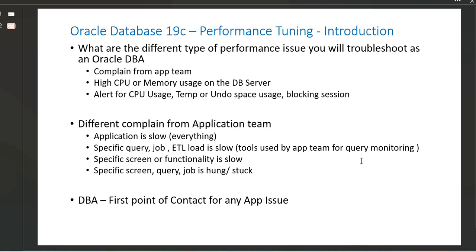What are the different types of complaints you'll receive from the application team? Sometimes they'll say the entire application is slow — whatever they click, any screen, any functionality, any feature, everything is running slow. Or they could come back and say there are specific screens, specific functionality, a specific job, ETL load, or a specific query running slow. They'll come with a specific SQL query saying it was running fine and now it is running slow, or it's a new query being tested in a non-production environment that's not performing well and needs tuning before going to production.